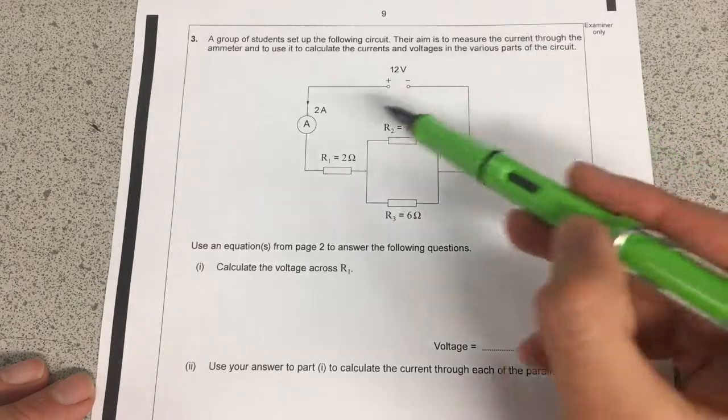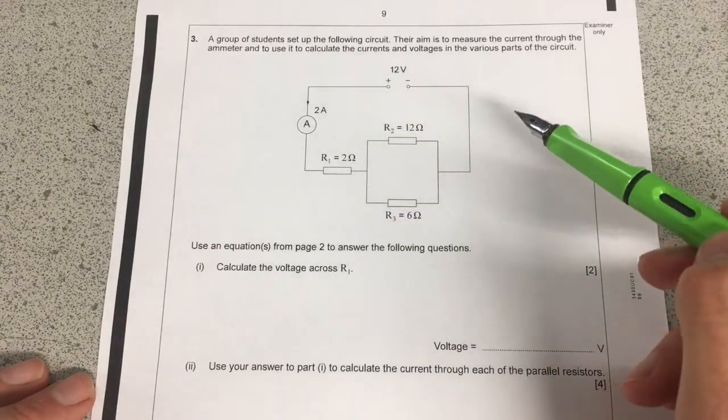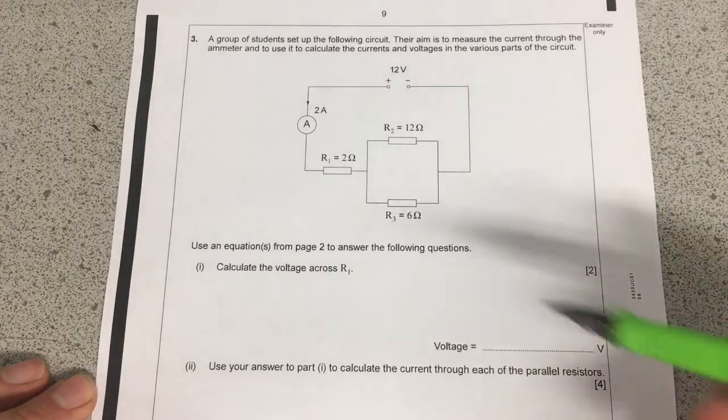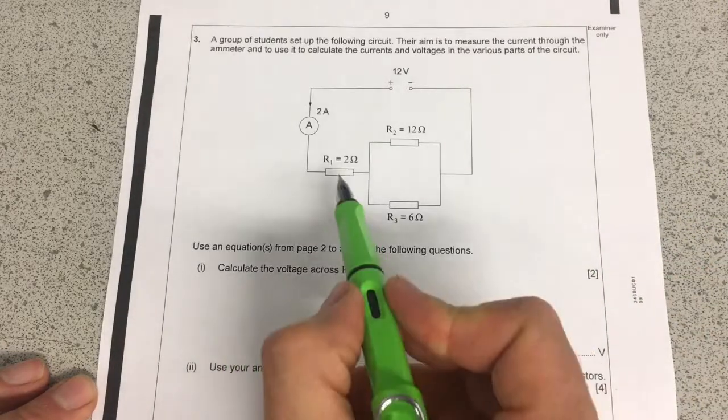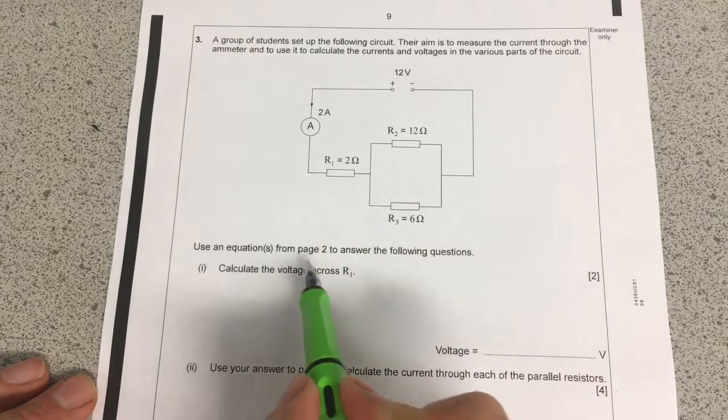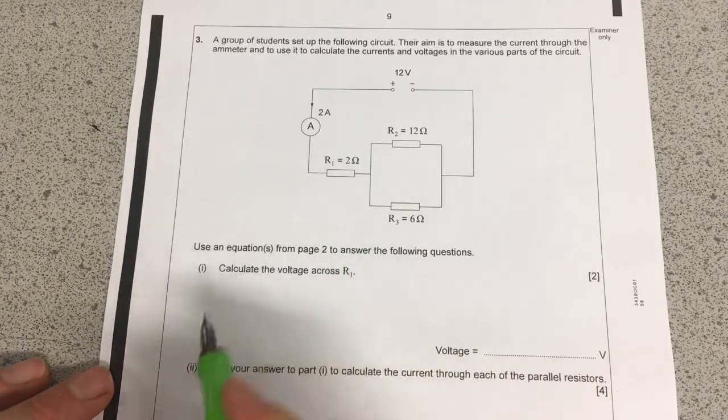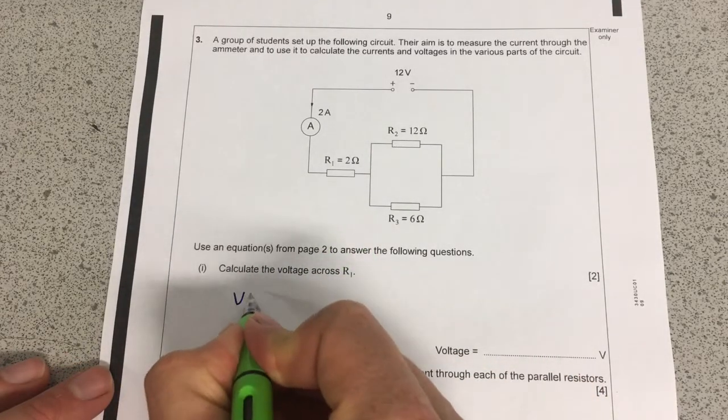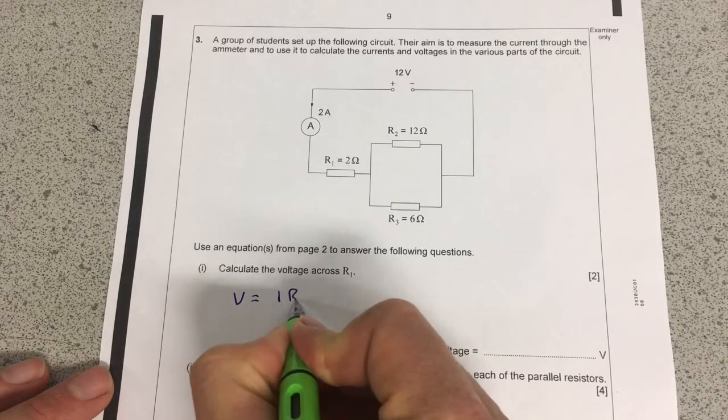So they give us some information at the top, and they also give us a diagram here, which is quite useful for puzzling out some of the answers. And they ask us to calculate the voltage across R1, which is this one here. And they want us to use an equation from page 2, so I'm just going to find V equals I times R.